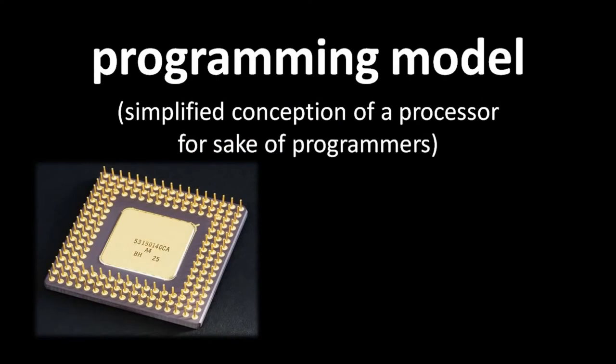If we wanted to fully understand how CPUs work, we would have to get into a lot about circuitry and electricity, as well as material science to understand how CPUs are manufactured. As programmers, though, we don't really need to know how CPUs work as long as we understand what they do. What programmers care about in regards to a CPU is its so-called programming model — the abstraction presented to programmers that elides over the messy details of circuitry and voltages.